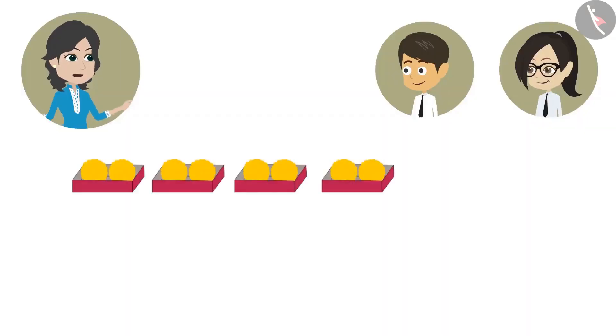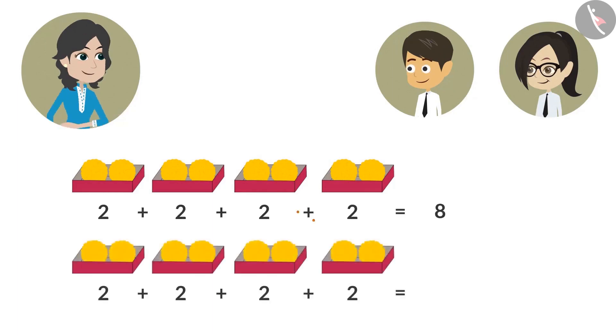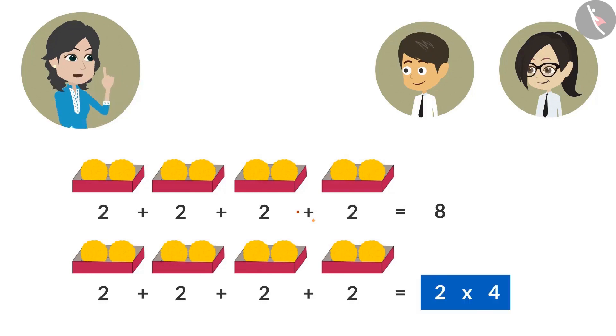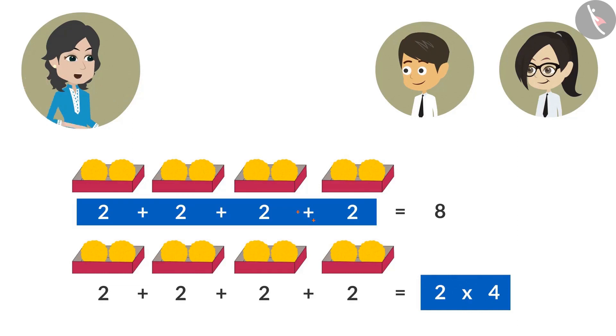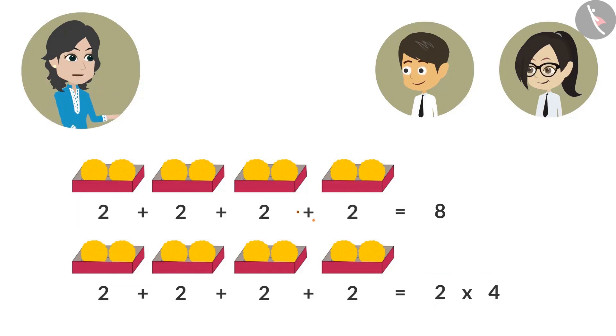We are adding them together to find the total number of ladoos. See, Vandana, to know the number of ladoos in 4 boxes, you have added 2, 4 times. Instead of this, you can multiply 2 by 4. Multiplying 2, 4 times means adding 2, 4 times. That is why both answers are the same, which is 8.